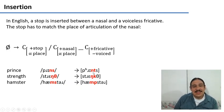For example, in prince, we have an alveolar nasal and we insert an alveolar stop, the t. In strength, we have an alveolar nasal and then we insert an alveolar consonant, a k. In hamster, we have a bilabial nasal and we insert a bilabial stop, a p - hamster.